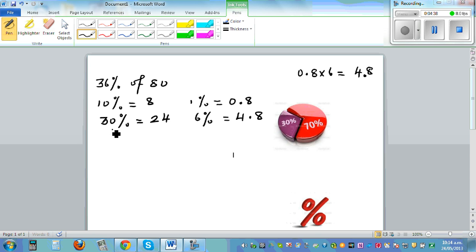So 6% would be 4.8. We can write 4.8 like this, and this can be written as 24.0. So we can say 36% is how much? 28.8. So let's find 80% of 36. It just swaps the percentage with the numbers. So 80% of 36.